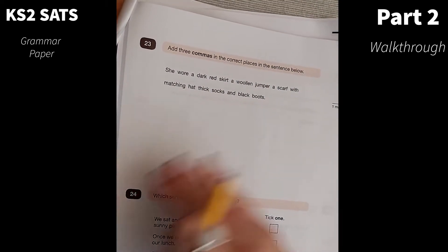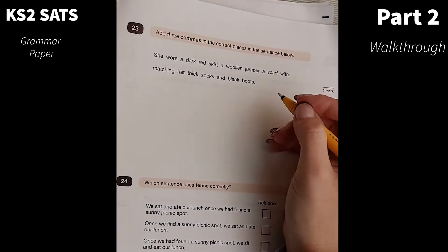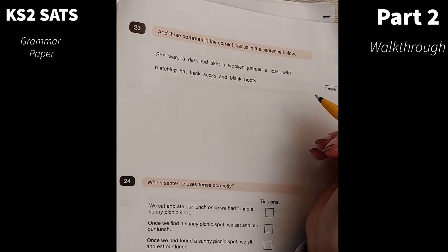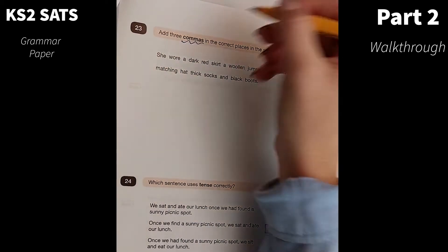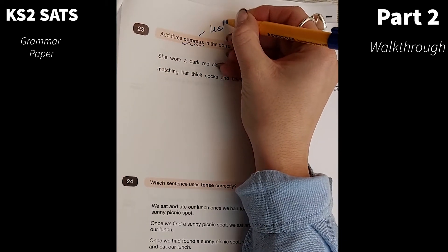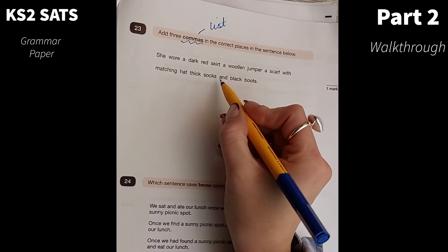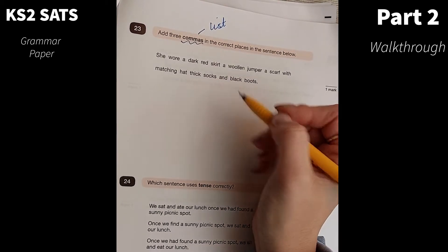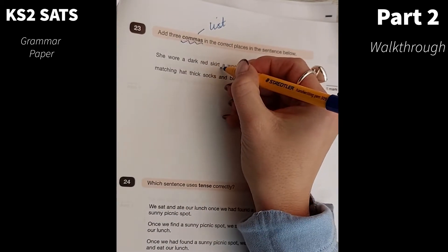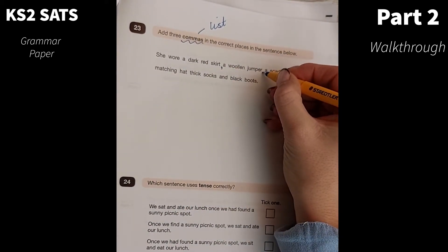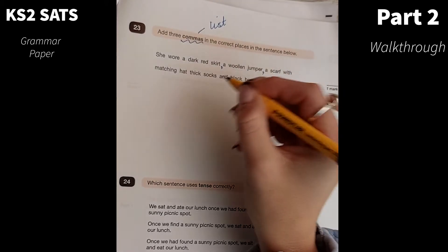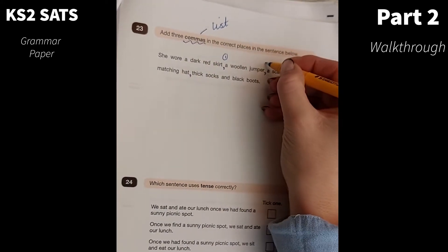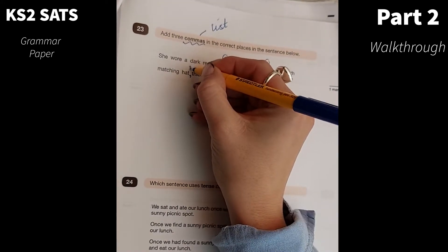Number 23. I remember this question well from when I marked the papers in 2019. Add three commas in the correct places in the sentence below. Here, my commas are being used to list and I need to remember in this situation that I shouldn't be putting a comma before and. Let's have a look. She wore a dark red skirt, comma, a woolen jumper, comma, a scarf with matching hat, comma, thick socks and black boots. So I have one, two and three commas there.